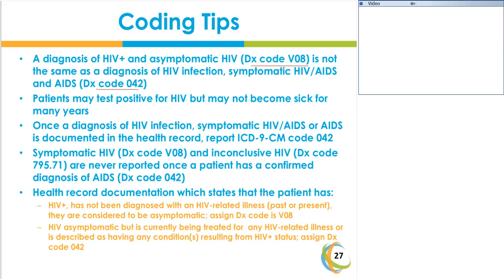If the patient was initially asymptomatic (V08) or inconclusive, and later definitively diagnosed with the HIV infection, you would not report these two codes — you would only report 042. Additional tips: If the health record states the patient is HIV positive and has not been diagnosed with an HIV-related illness, they are considered asymptomatic — code V08. If an HIV asymptomatic patient is being treated for any HIV-related illness or condition resulting from their HIV status, the code is 042.